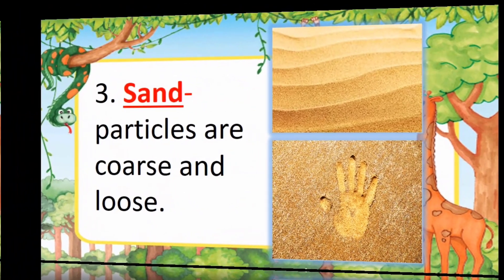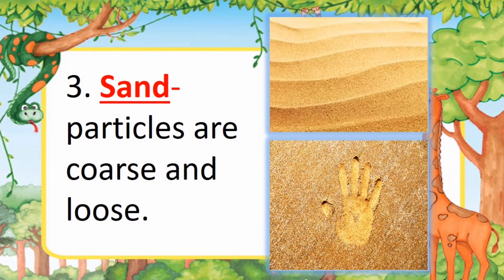The third type of soil is sand. Particles are coarse and loose. It is ideal for house and building construction.